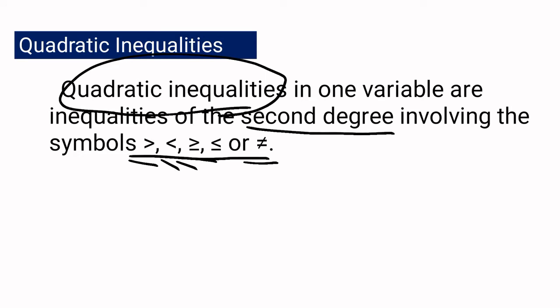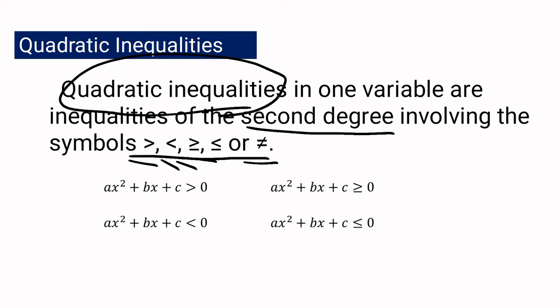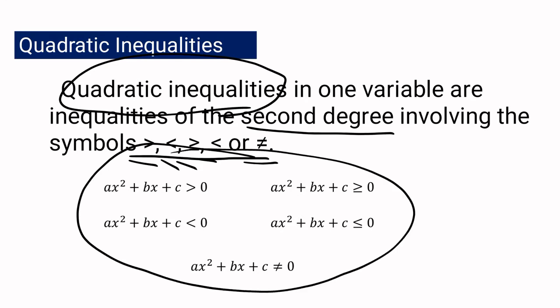Quadratic inequalities can be written in the following forms: ax squared plus bx plus c is greater than 0; ax squared plus bx plus c is less than 0; ax squared plus bx plus c is greater than or equal to 0; ax squared plus bx plus c is less than or equal to 0; or ax squared plus bx plus c is not equal to 0. Any expression written in these forms is considered a quadratic inequality.